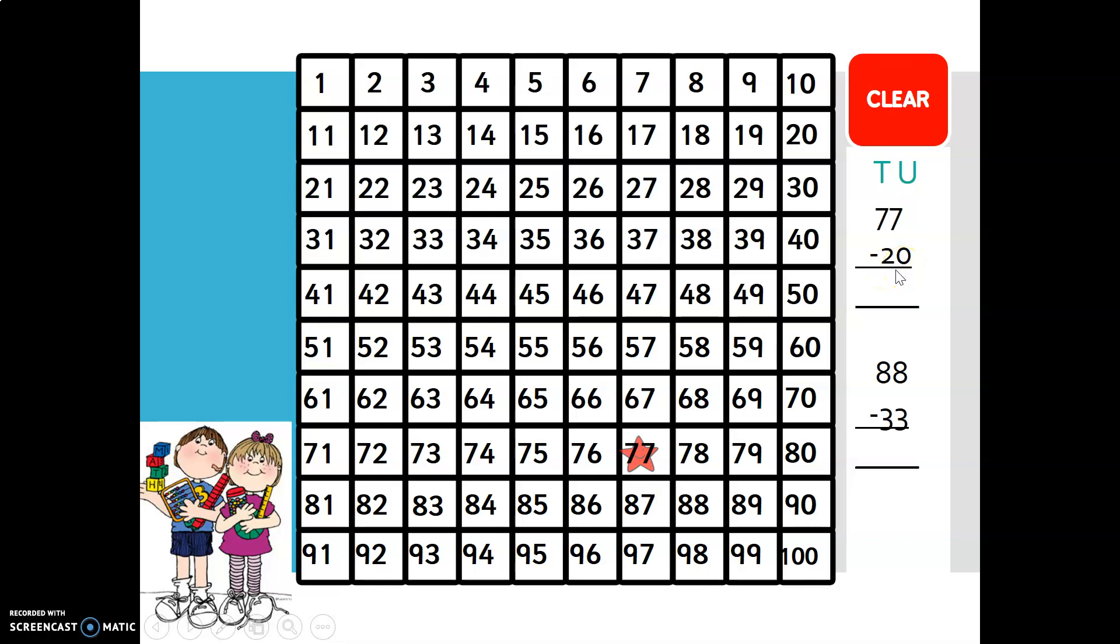We know that moving up a row, we are subtracting 10. So there are two 10s, so we need to move up two rows. One, two, and we get to 57. There are no units, so we found our answer. So 77 minus 20 is 57.